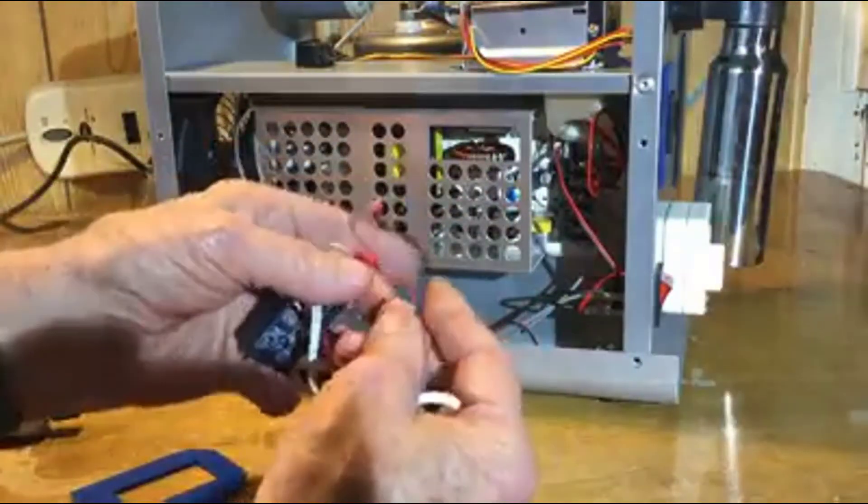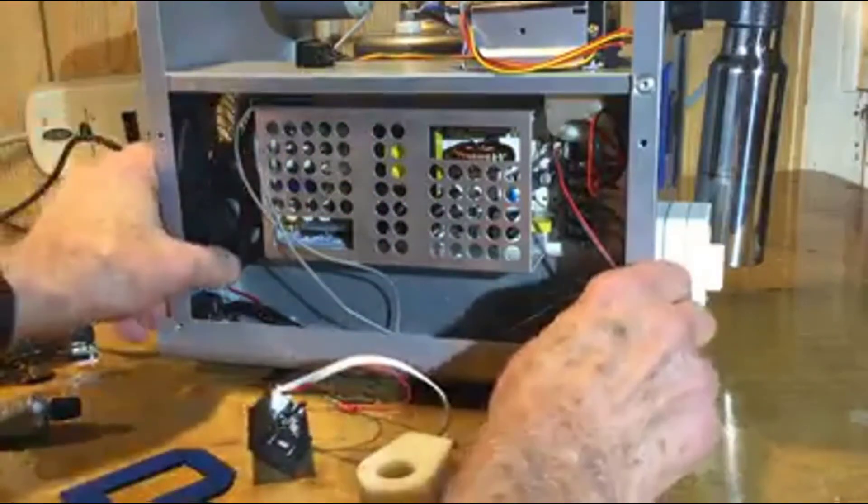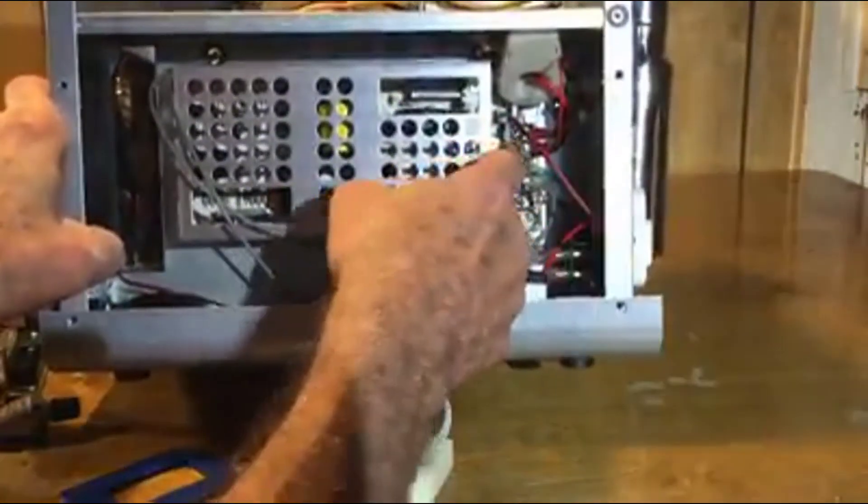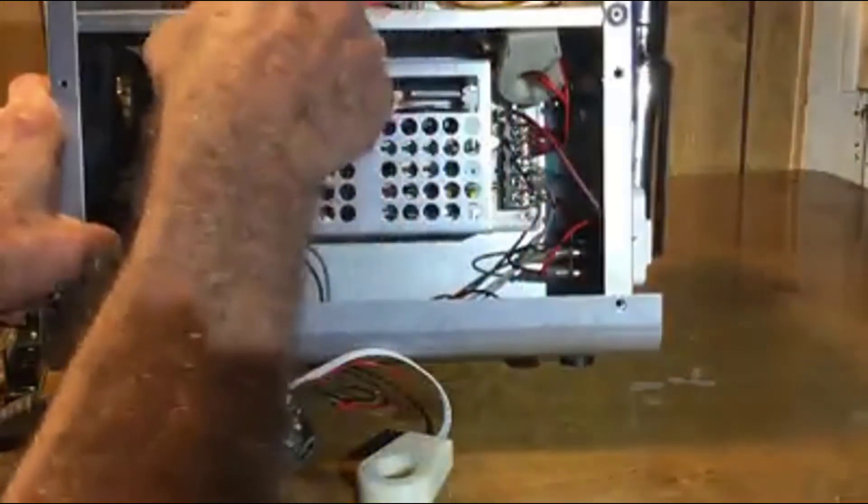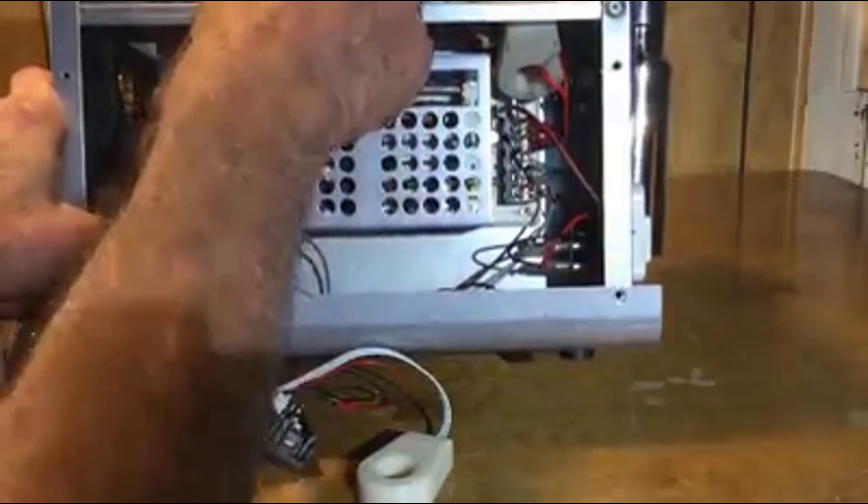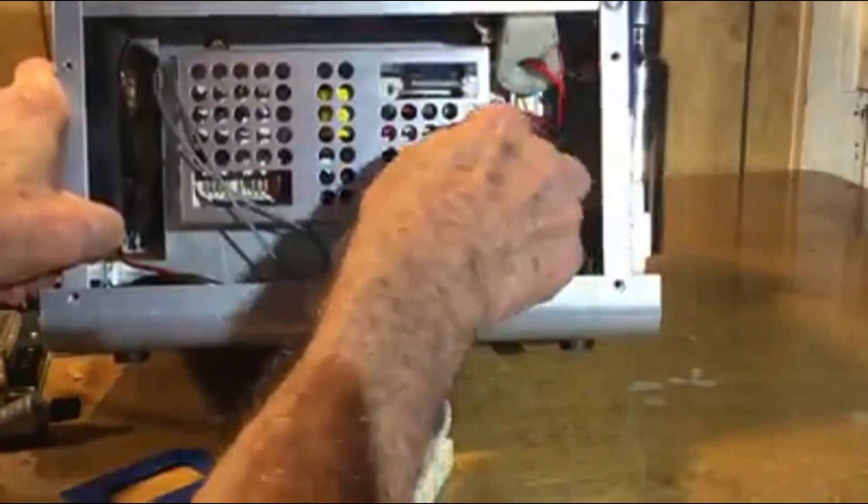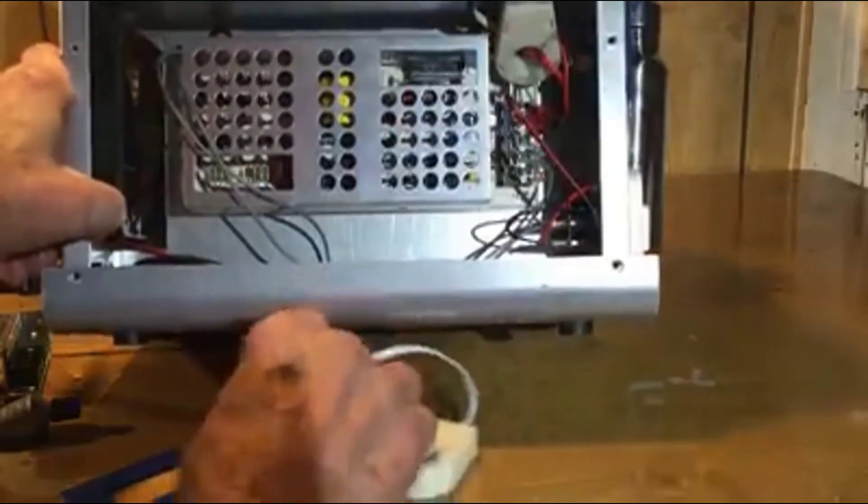I've added the terminals to it and it piggybacks the 28 volt connections going up to the pulse width modifier. You just piggyback them on there. It takes 28 volts.